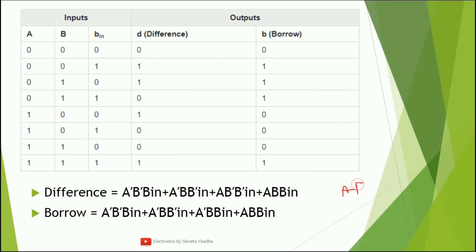In a full subtractor we want to perform A minus B minus B_in. We can rewrite this as A minus (B + B_in) by taking minus as common, so the negative becomes positive: A minus (B + B_in). Using this second form makes it easy to simplify and fill in the truth table. For example: zero minus zero minus zero gives difference zero, borrow zero.